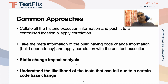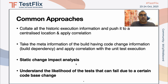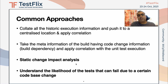One common approach that folks take is to collate the historic information produced through execution, push it to a centralized location, and create a central dashboard. The central dashboard provides different ways of correlating the historic execution information, and that basically tells you what tests should be executed when there is a code change. It does not correlate between the code change and the number of tests — it just tells you, if there is a build, what are the likely test cases that should be executed.